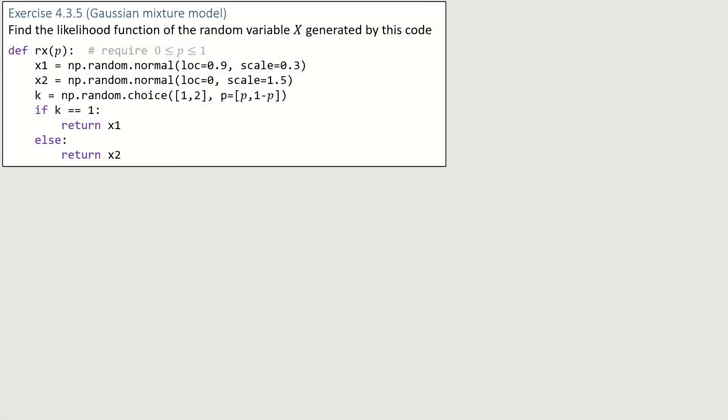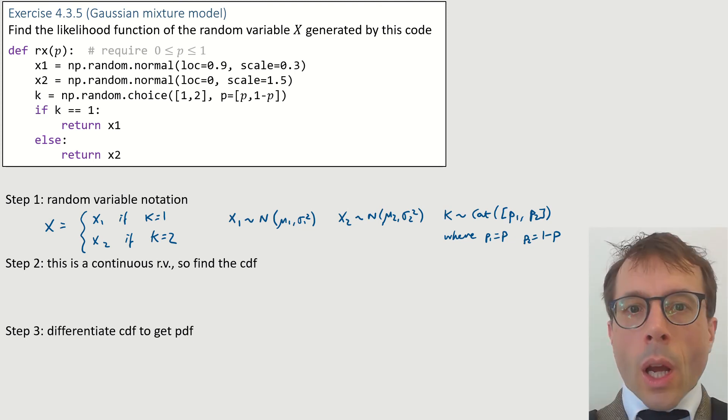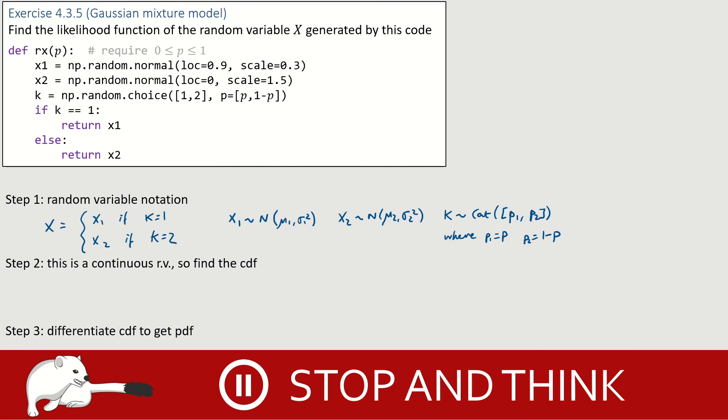Now, one final example to check you've got the hang of it. Have a read. I've already taken step one, writing it out in random variable notation. Now, pause the video and see if you can do steps two and three. When you're ready, press play.